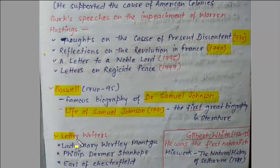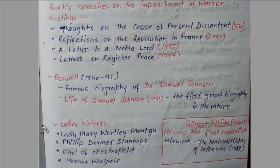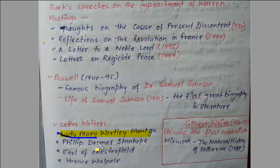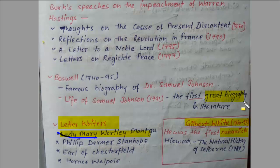Now we will talk about some letter writers of the time. Famous letter writers include Lady Mary Wortley Montague, Philip Dormer Stanhope the Earl of Chesterfield, and Horace Walpole. Also important is Gilbert White, who was the first naturalist. So remember: first naturalist was Gilbert White, and the first great biography in English literature was 'Life of Samuel Johnson' by Boswell.